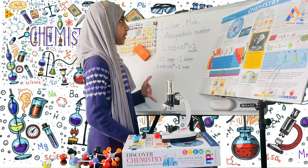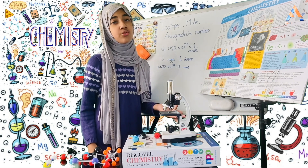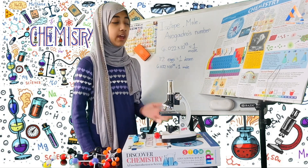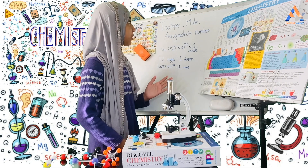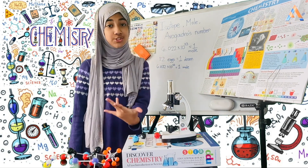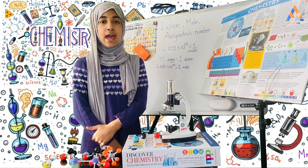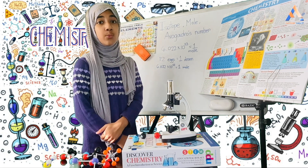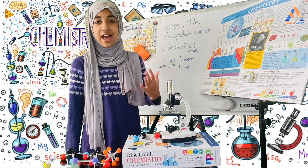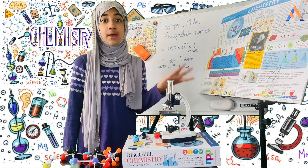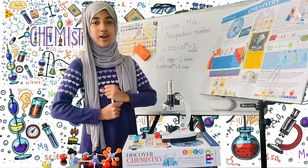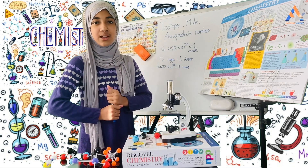So dear viewers, in my previous video I showed you the basics and terminology of chemistry. Here I showed you about the isotope, mole, and Avogadro's number, which I hope you understood. And inshallah, in my next video I will show you the journey of an atom to become an ion — how it turns from an atom to an ion. So keep watching. Thank you, and assalamualaikum.